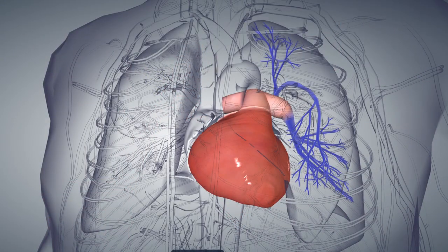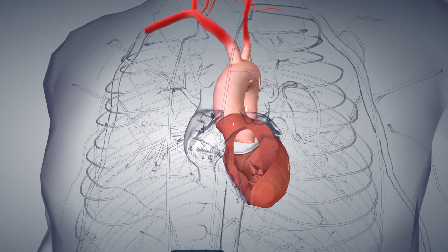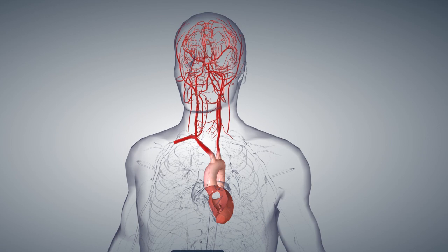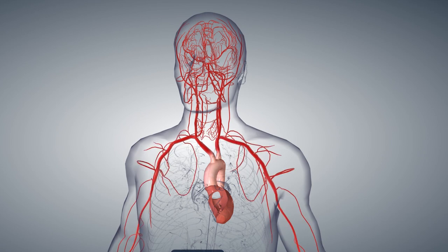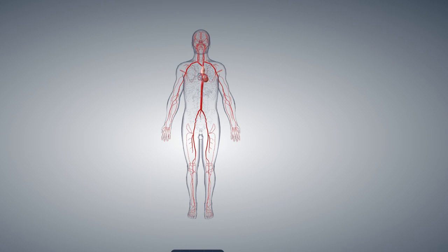When that heart takes that blood and pumps it to the lung, on the other side of the heart — the left side — the new blood, the blood that has the energy, is received. Then the heart pumps that blood from its own chamber up to the brain through the brachiocephalic arteries, to the arms through the subclavian arteries, back to itself through the coronary arteries, and to the rest of the body through the descending aorta, which has branches to get to every nook and cranny of your body so that those cells can stay alive.